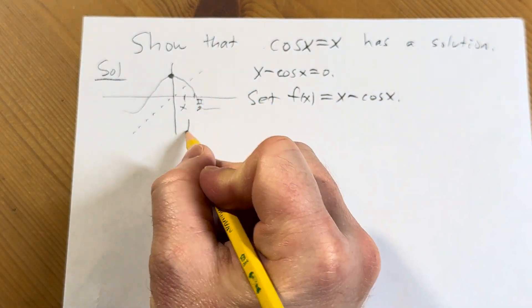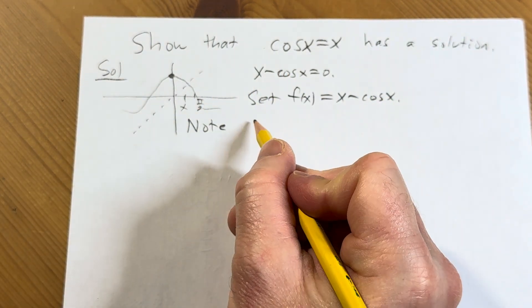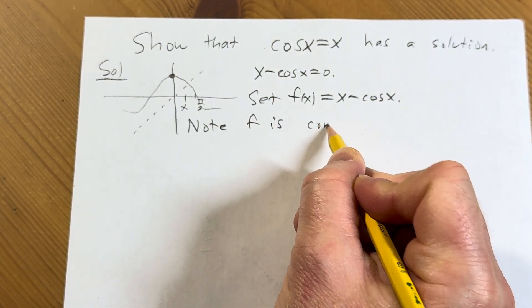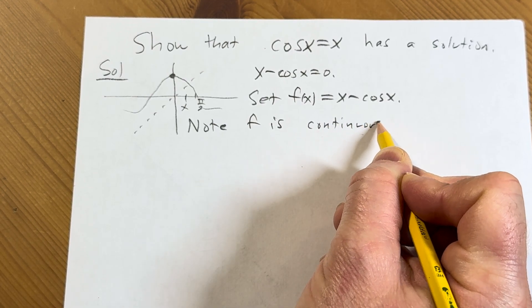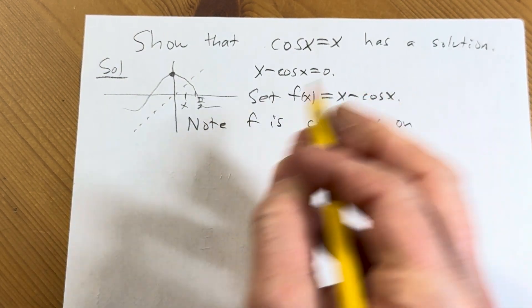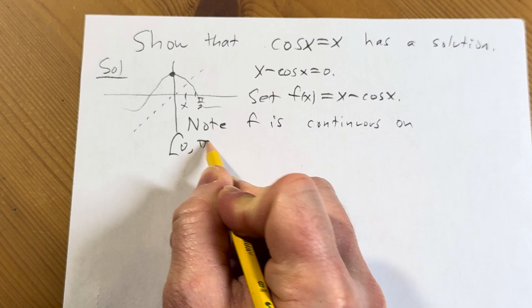And then note f is continuous. We're going to invoke the intermediate value theorem on the interval 0 to pi over 2.